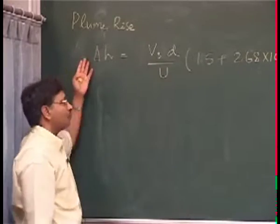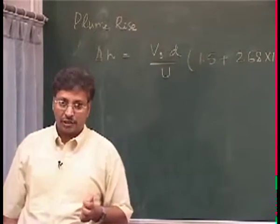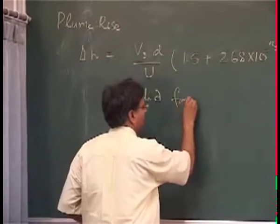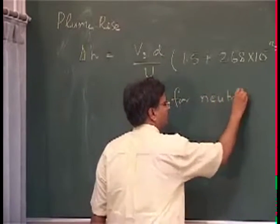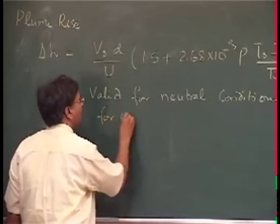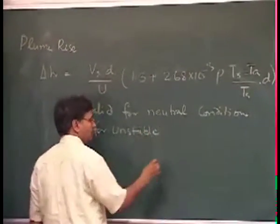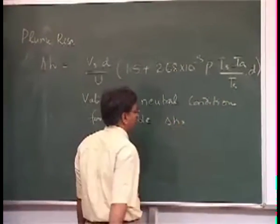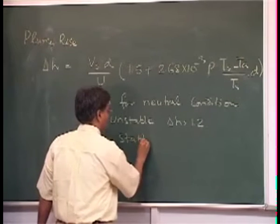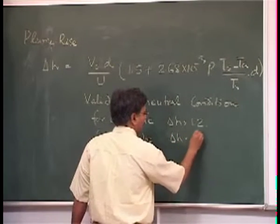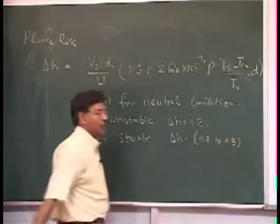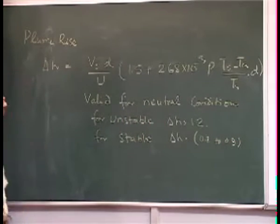This formula for the plume rise is generally valid for neutral conditions. For unstable conditions, multiply delta H by 1.2; for stable conditions, use 0.8 to 0.9, whatever you take.